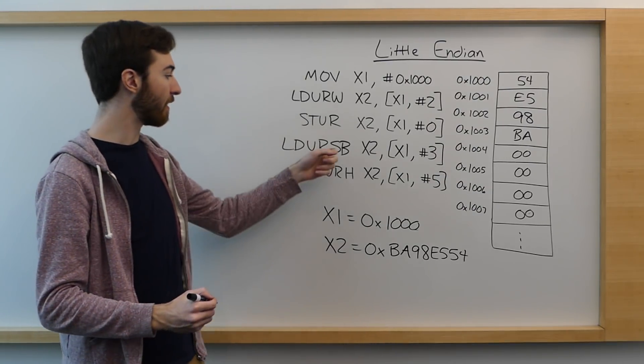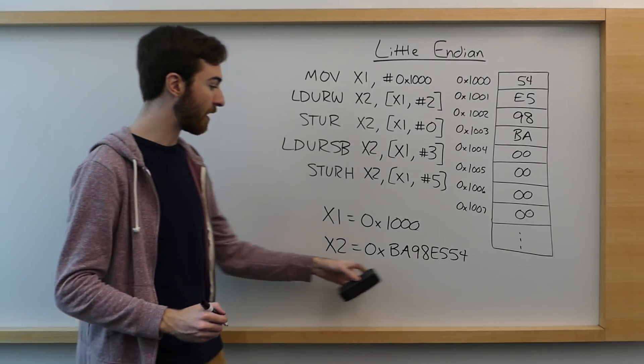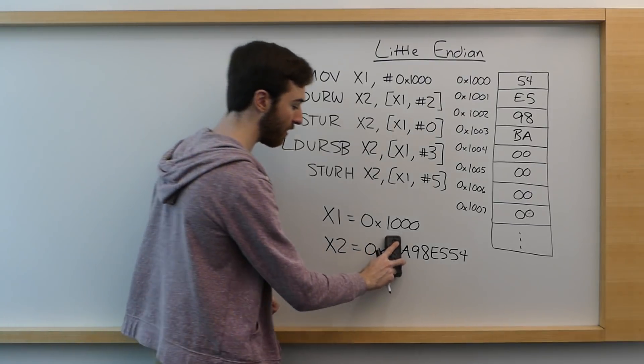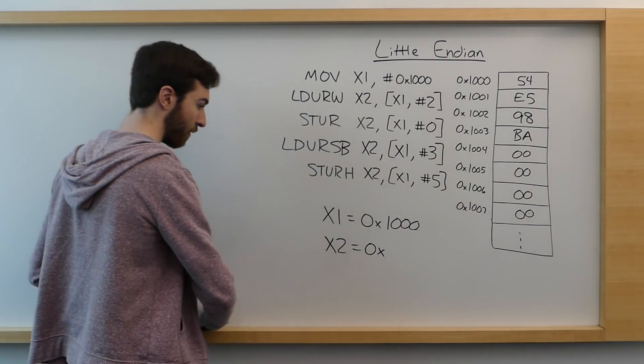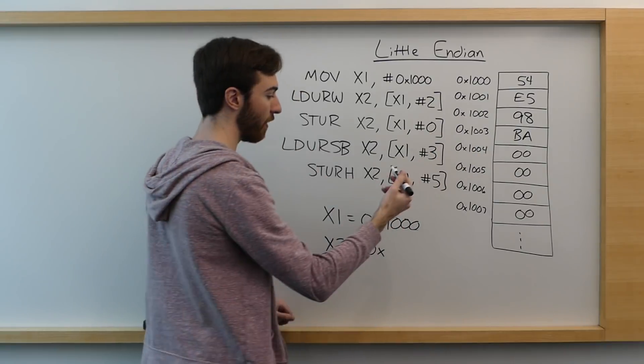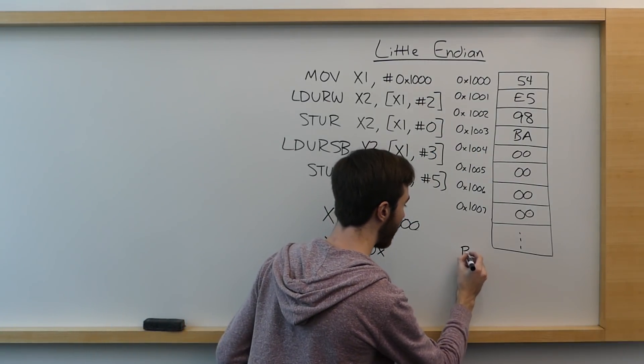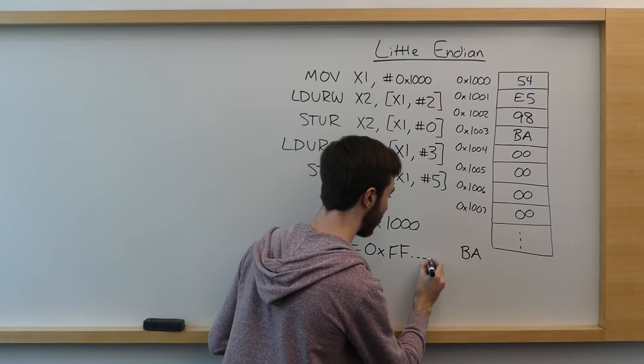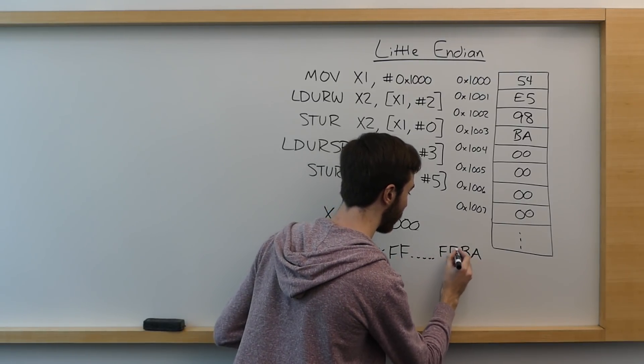meaning that since this is a sign-extended load, it'll fill the entire register with ones except for the single byte that we're reading in. So we will have the single byte BA that we read in, and everything else is just filled with ones.